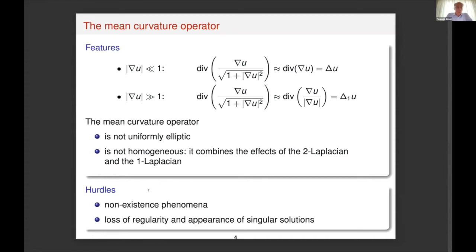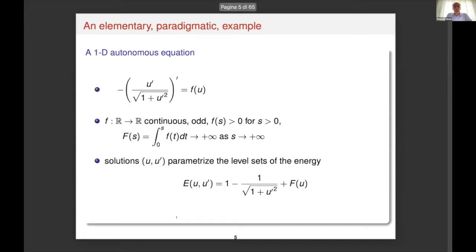This creates some difficulties. For instance, non-existence phenomena may occur, the solution may lose regularity, and singular solutions may appear. It is convenient to look at the following elementary but paradigmatic example: a one-dimensional autonomous equation where the right-hand side f is continuous, positive for s positive, and its potential, vanishing at zero, diverges as s tends to plus infinity.